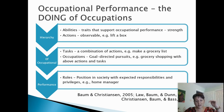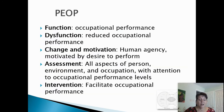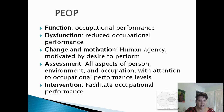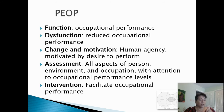So the hierarchy of occupational performance goes from the lowest level of abilities and actions, to the next level of tasks and occupations, and then to the highest level, which is roles. Function is occupational performance, and dysfunction is reduced occupational performance, as measured by the person's assessment. Change happens through human agency in this model — their term for basic intrinsic motivation — which is motivated by a person's desire to perform the occupations they have selected within their roles.